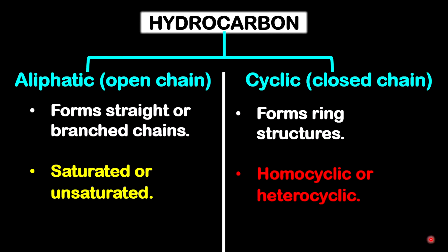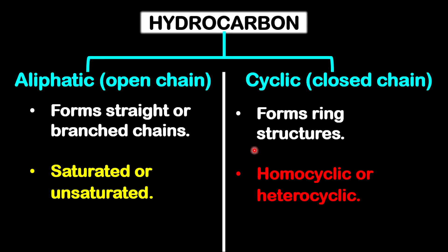To distinguish between aliphatic and cyclic: aliphatic are straight chains, and the straight chain could either be branched as well. Cyclic are definitely ring structures — there is no open end, it has a continuous ring structure. For aliphatic they can either be saturated or unsaturated, and for cyclic they are generally homocyclic or heterocyclic.